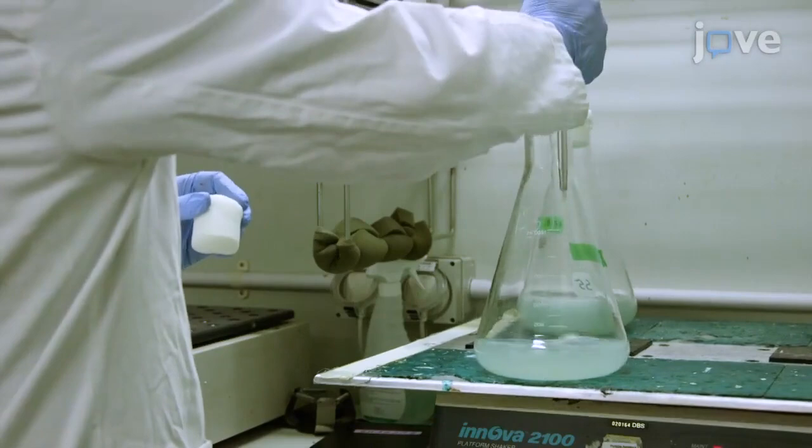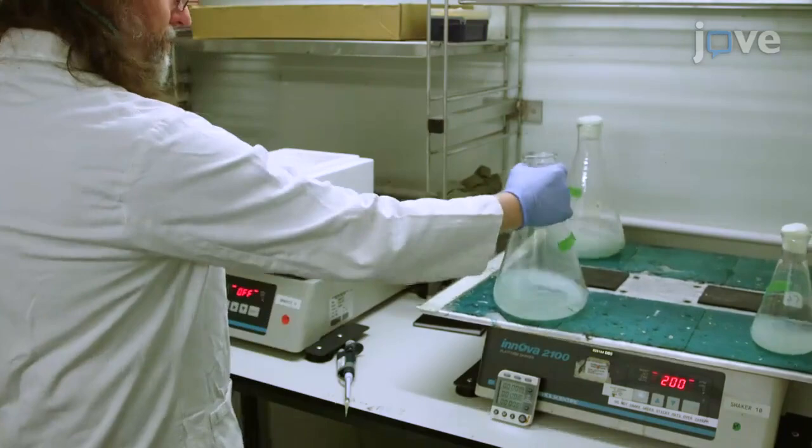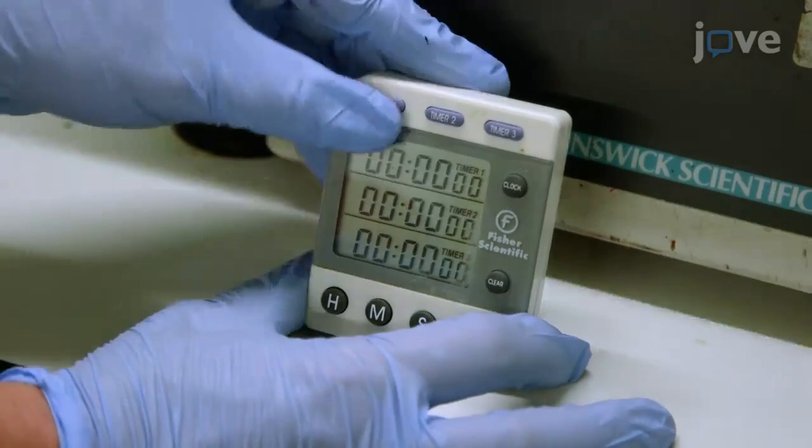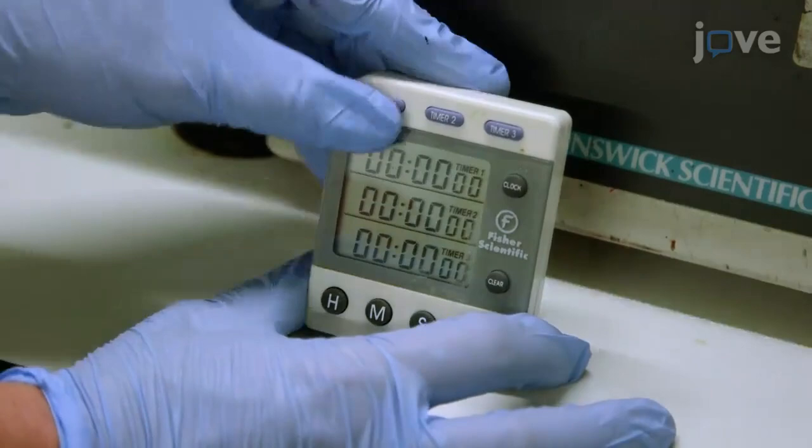Then, add 4TU to the culture to a concentration of 10 micromolar and mix vigorously. Thio-label for a length of time between 15 seconds and 5 minutes.